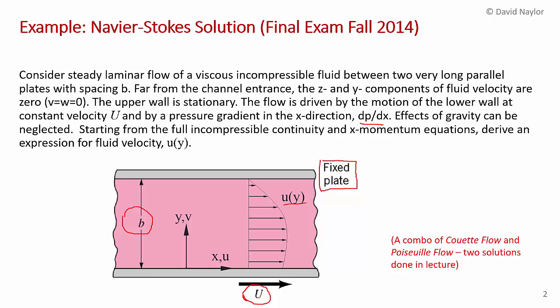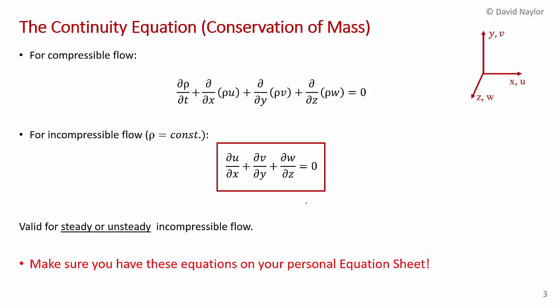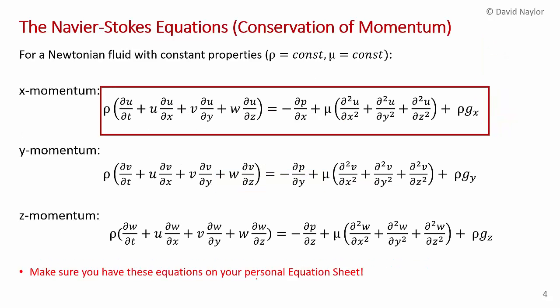A couple of slides from Chapter 4 just to refresh your memory — this is not part of the solution. In Chapter 4 we derived the continuity equation. This is the compressible form, but since the flow is incompressible the density is constant. Make sure you put both the continuity and momentum equations on your personal equation sheet, as you'll potentially need them on the final exam.